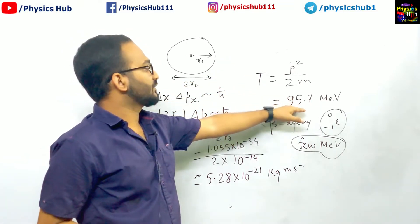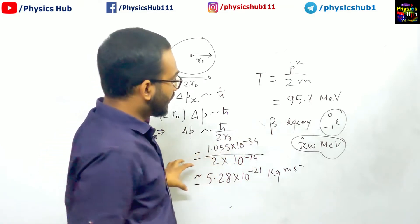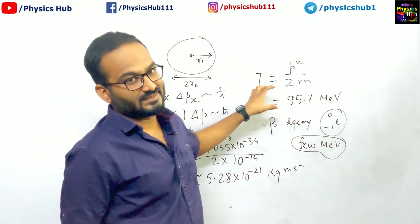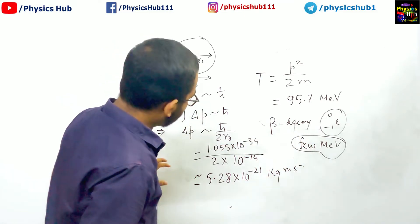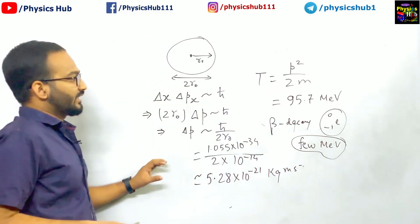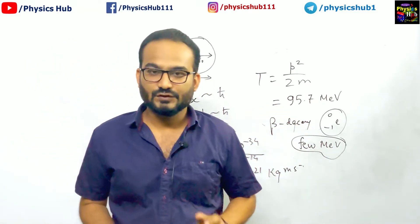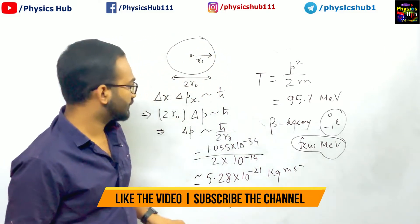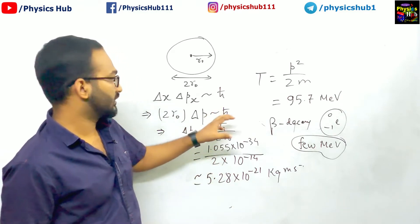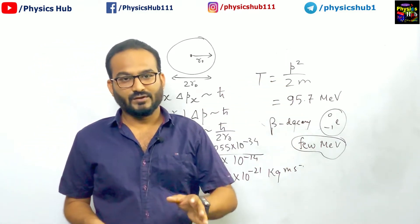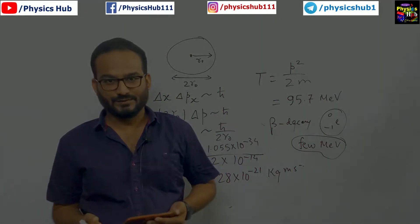The electron energy must be 95.7 MeV. So from this we can conclude that electrons cannot exist inside the nucleus. So in this way, using the uncertainty principle, we can prove that electrons cannot lie inside the nucleus. So this is all for this video guys. I hope you have understood the basic reason of the non-residing electron inside the nucleus. And if you have any queries regarding this, you can let me know in the comment section and see you guys in the next video.